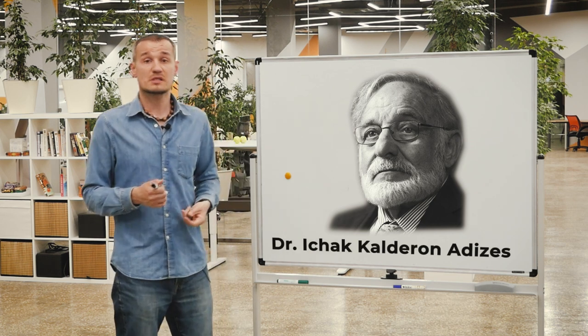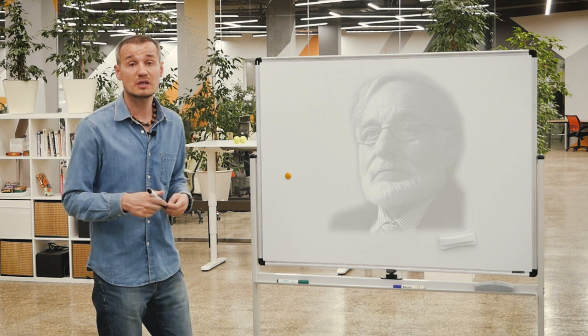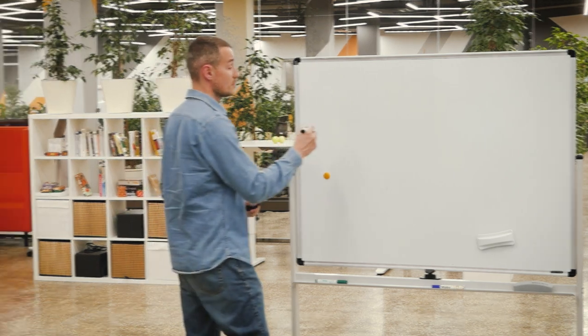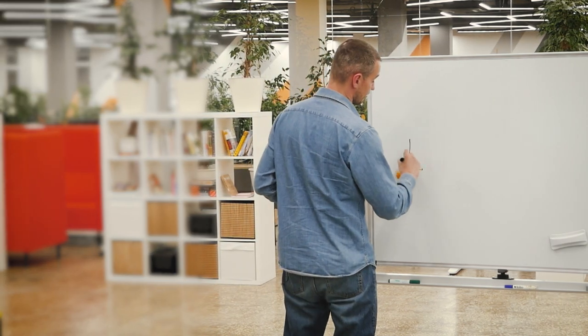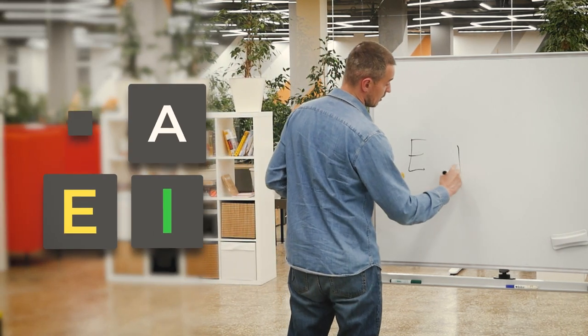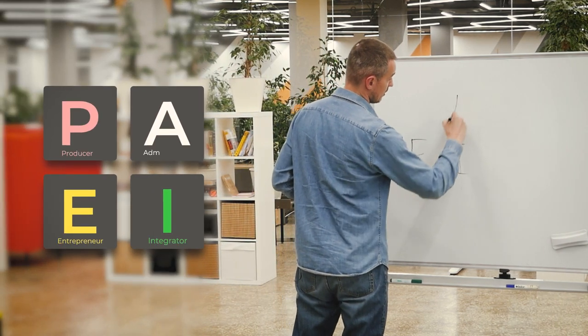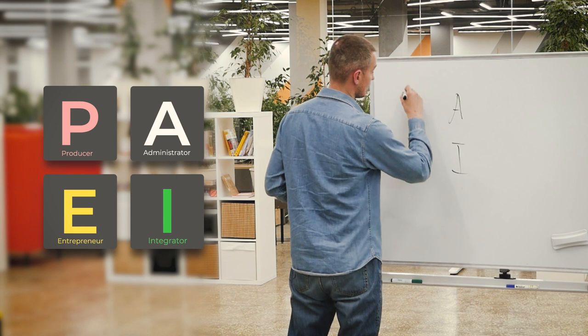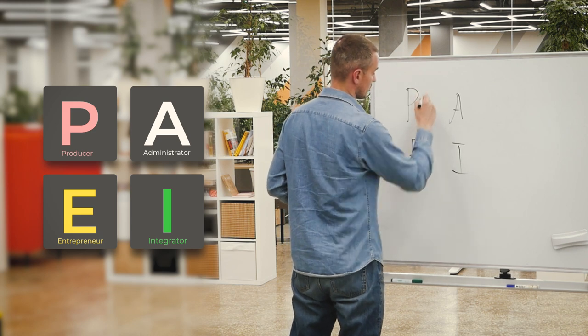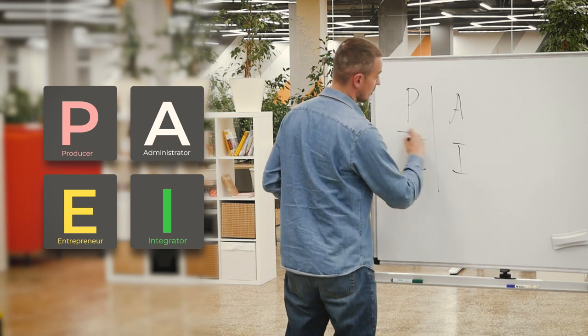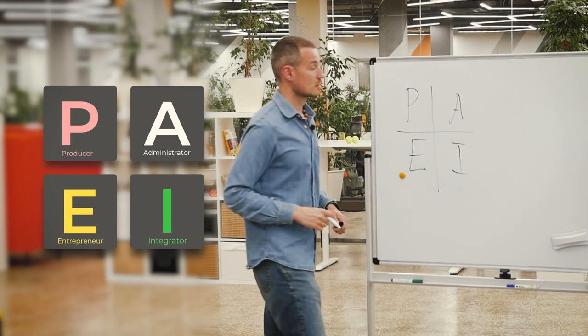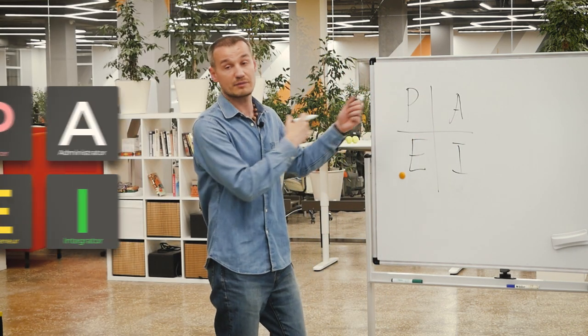The four roles are: Producer, Administrator, Integrator, and Entrepreneur. This square — with Entrepreneur, Integrator, Administrator, and Producer — is how Adizes is usually illustrated.